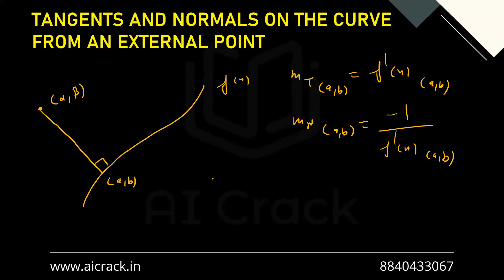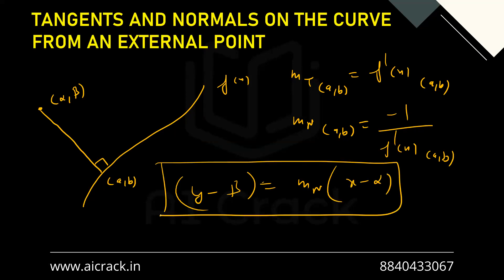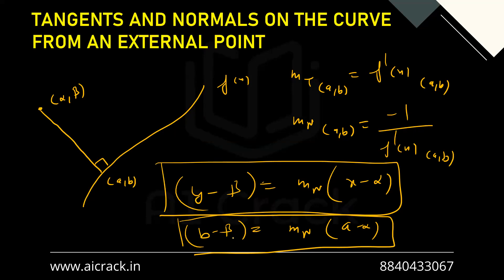The equation of the normal is: y - beta = m_n × (x - alpha). We know alpha, beta, and m_n in terms of (a, b). Since (a, b) also lies on this normal, substituting it gives: b - beta = m_n × (a - alpha). This is one equation in terms of the unknowns a and b.